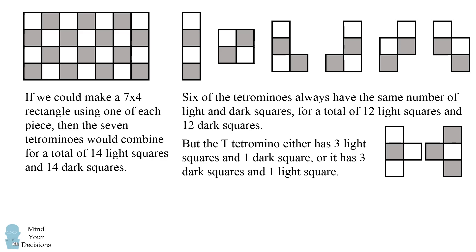The T tetromino however creates an asymmetry. It either has three light squares and one dark square, or it has three dark squares and one light square.